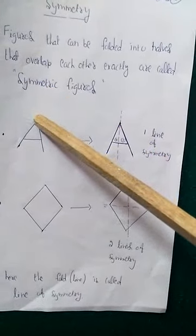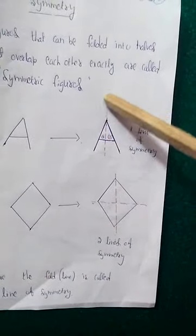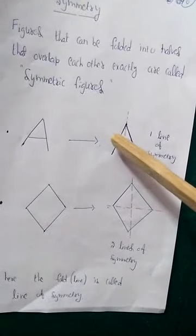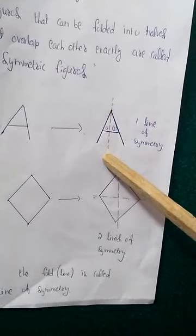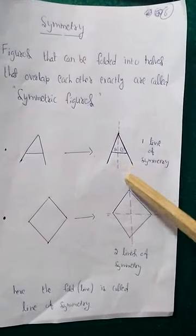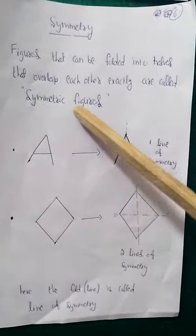For example, take the letter A. I have drawn the letter A on paper. When we fold it exactly along a line, this line divides A into two parts — part 1 and part 2. If we fold along this line, part 1 will overlap part 2 exactly. Such figures are called symmetric figures.